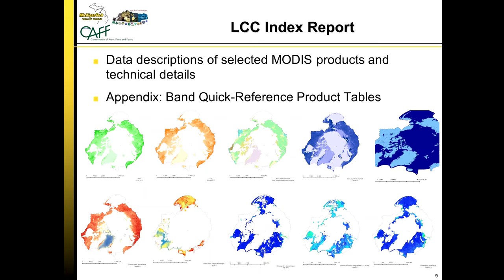One output of this initial LCC index project is a report on the CAFF website. In this report there are very detailed data descriptions of each of the 11 MODIS data products. Even if you don't know what NDVI is, you can go to that report and it will describe in non-technical terms that NDVI is a Normalized Difference Vegetation Index, how it is calculated, and for each product, any specific limitations of using these products in the Arctic are also discussed — for example, how low solar zenith angles may affect certain products at certain times of year.